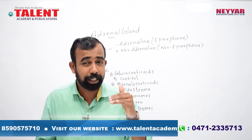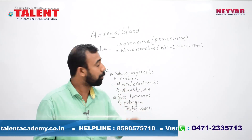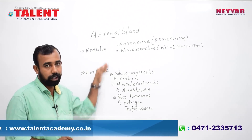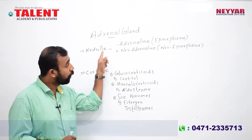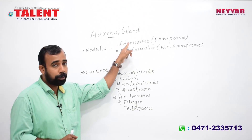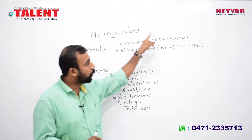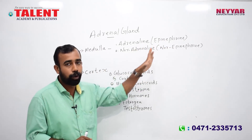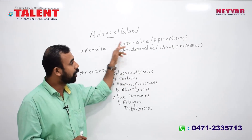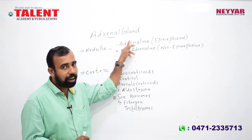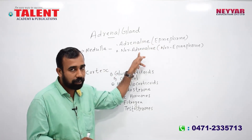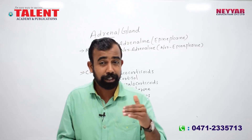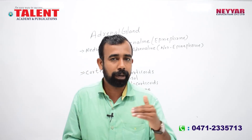We are going to discuss the adrenal gland, also called the emergency gland. We are going to discuss the inner region. We have a medulla and a cortex. The medulla hormones are called adrenal hormones, also known as the emergency hormone, secreted in emergency conditions.